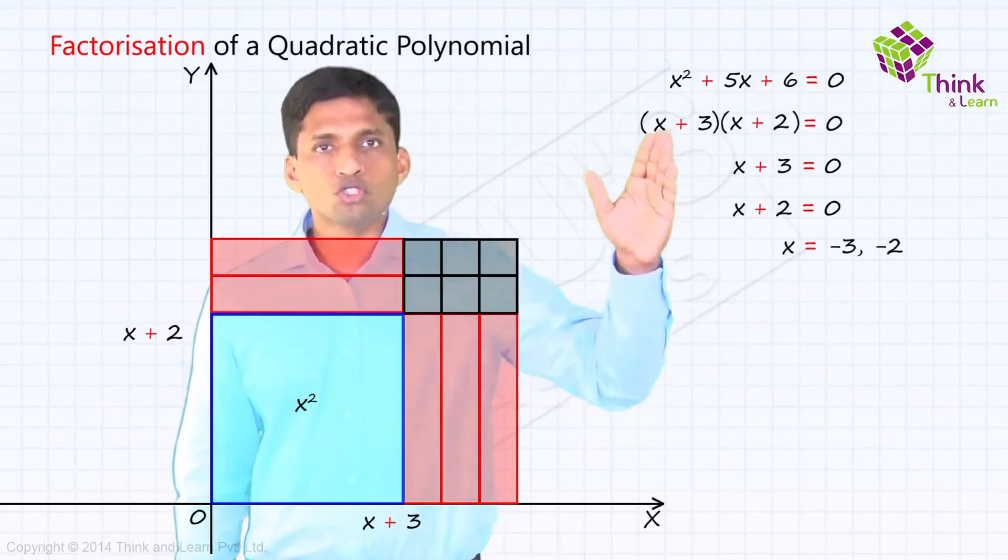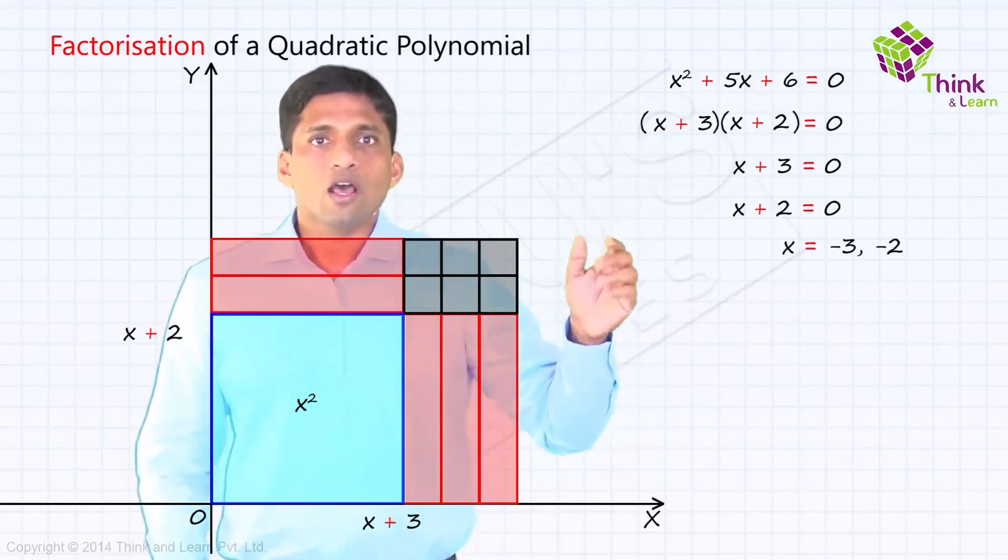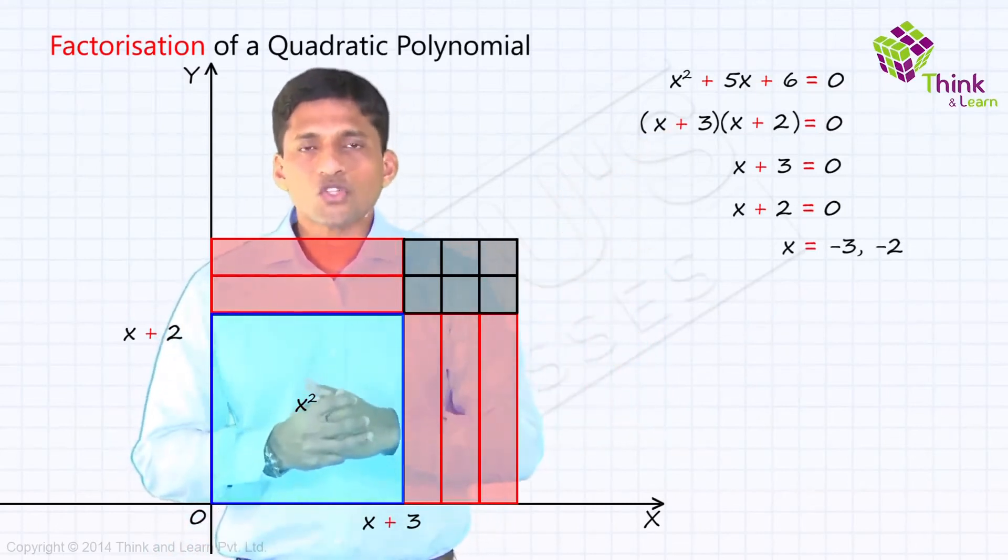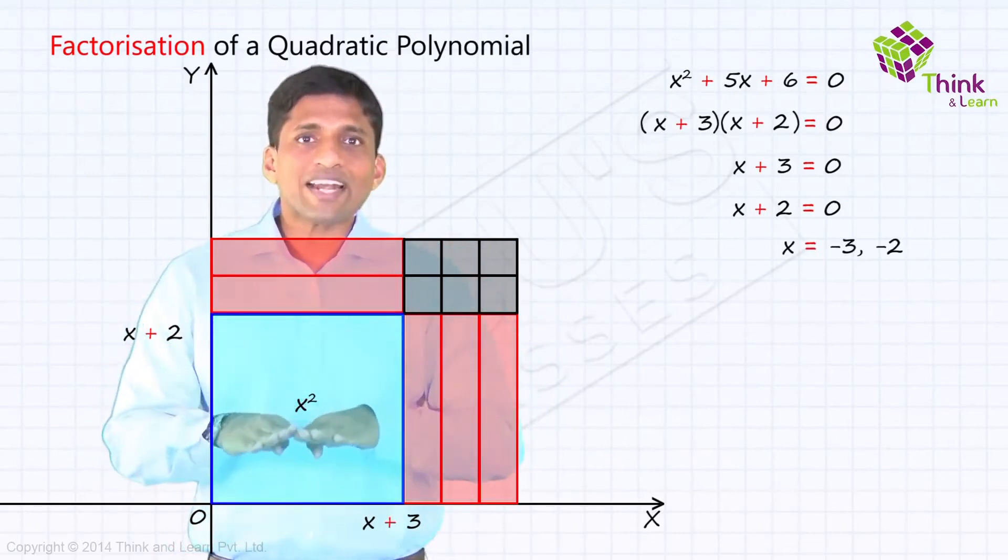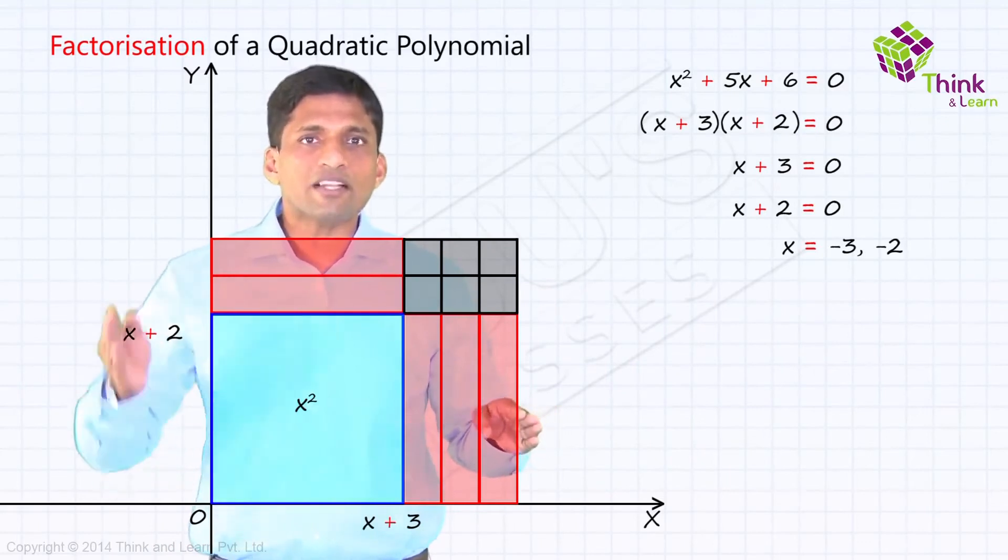So minus 3 and minus 2 are the roots of this quadratic equation. So visualizing this is again, it's going to be very easy. If you relate with this diagram, now see this rectangle with length x plus 3 and breadth x plus 2.